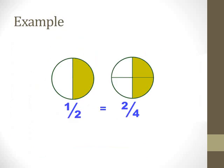In another example, we have two circles. The first circle is divided into two equal parts and we shaded one of them — so it is one over two, which is one part out of two equal parts. In the next circle we have four equal parts and we shaded two of them — two parts out of four equal parts. One part out of two equal parts is the same as two parts out of four equal parts. This is another example of the equivalent fraction one over two equals two over four.